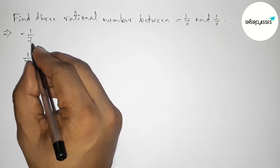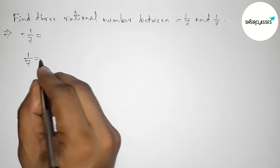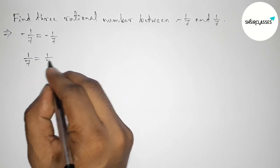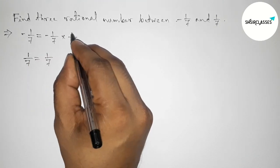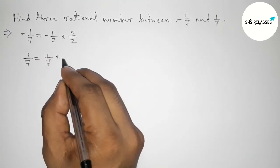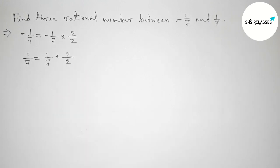So now doing some important calculation. So again write down here -1/7 and 1/7. Now for three rational numbers we have to multiply both numbers up and down by 2 in this way.